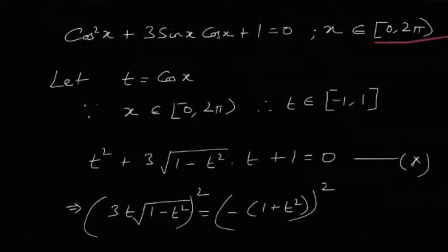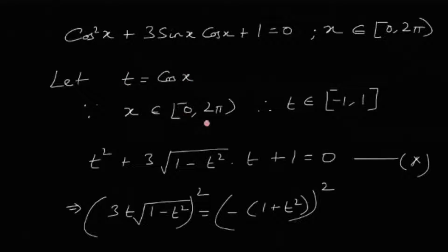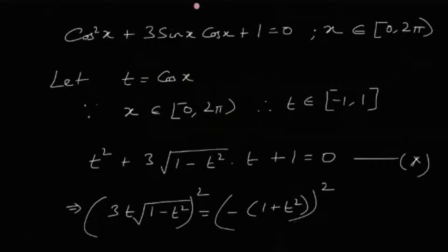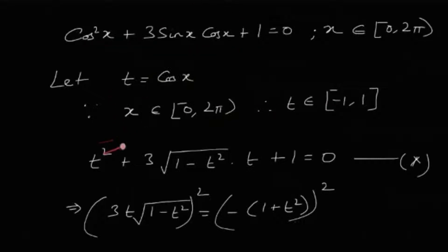Let t = cos x. Since x belongs to [0, 2π) — including 0 and excluding 2π — t belongs to [-1, +1]. Now writing the entire equation in terms of t: t² + 3·√(1 - t²)·t + 1 = 0.